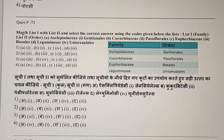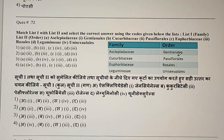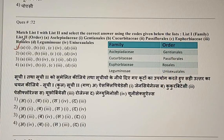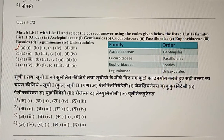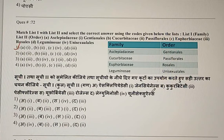Question 72: Match the family with its order. The correct answer is the first option. Asclepiadaceae belongs to order Gentiales, Cucurbitaceae to Passiflorales, Euphorbiaceae to Unisexuals order, and Leguminosae to Rosales order.